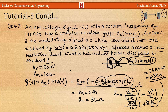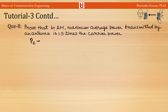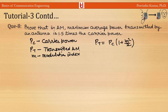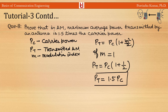Question 8: Prove that in AM the maximum average power transmitted by an antenna is 1.5 times the carrier power. Given Pt = Pc·(1 + m²/2), maximum transmission occurs when m = 1. Substituting: Pt = Pc·(1 + 1/2) = 1.5·Pc — that is, 1.5 times the power of the unmodulated carrier wave.